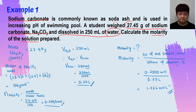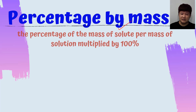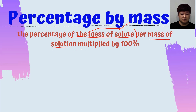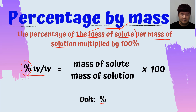A little tip: before you do anything, take out the data, take out the information, and write the formula of what the question asks for. That is the main thing, so that you know what you need to find. The next concentration we will look into is percentage by mass. Percentage by mass is the mass of solute over mass of solution, multiplied by 100. The unit of the final answer is percentage.